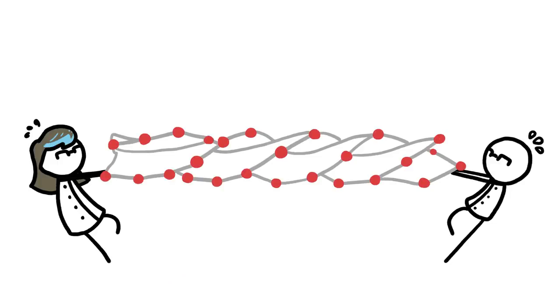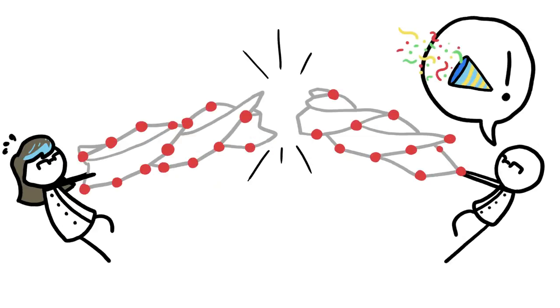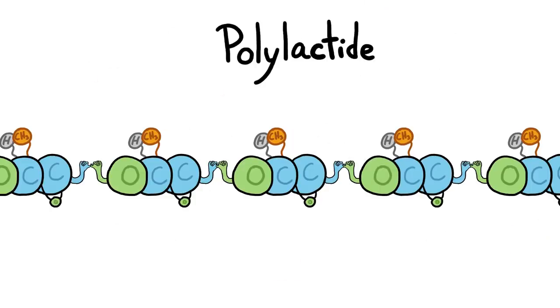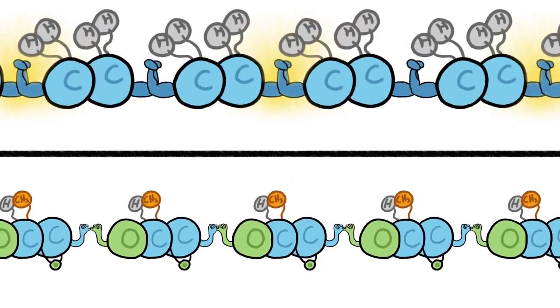So scientists are noodling around for a way to create less permanent plastics. New versions, such as polylactide, are still made up of repeating chemical units. But instead of those everlasting carbon-carbon bonds, the chains are held together by different types of links.